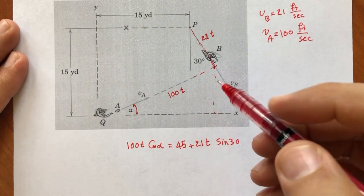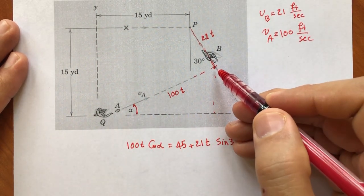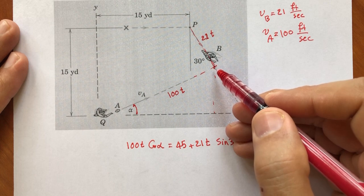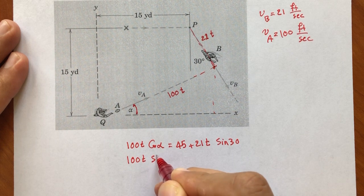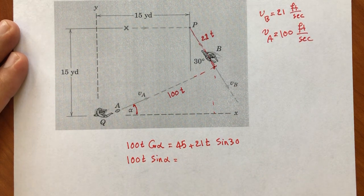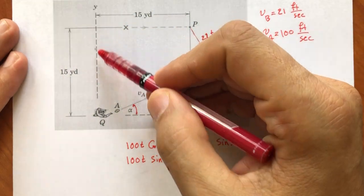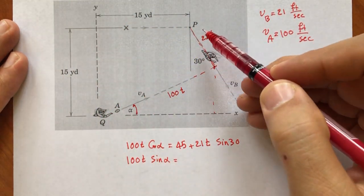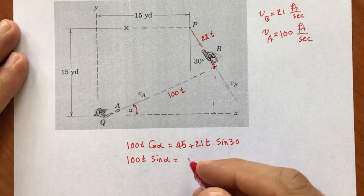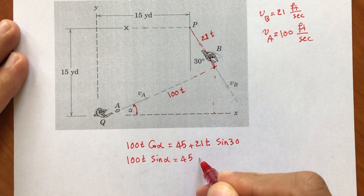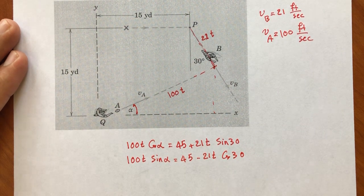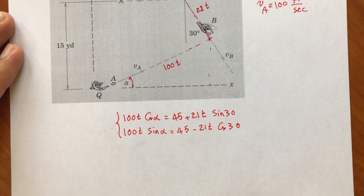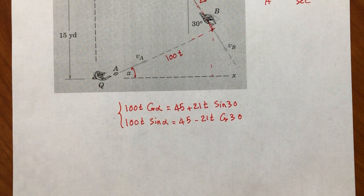In the y-direction: 100t times sine of alpha equals 45 minus 21t times cosine of 30. So we now have two equations and two unknowns, and mathematically we should be able to solve this problem.